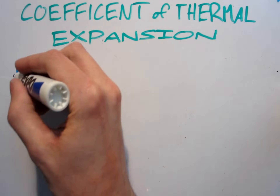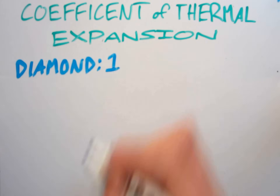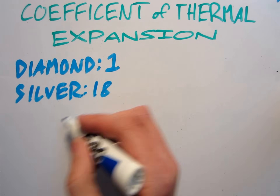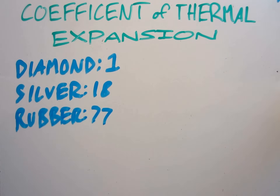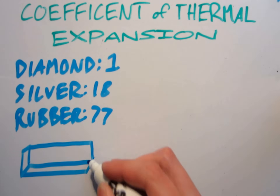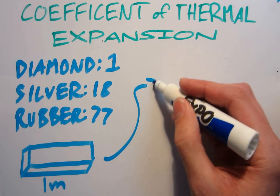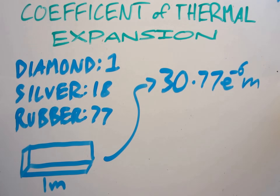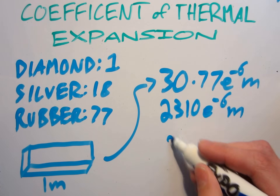Diamond, which is obviously a very hard material, has a coefficient of 1. Silver has 18, and rubber comes in at 77. To give you an idea of what these numbers mean, if you had a meter-long rubber eraser in your freezer and you moved it outside on a hot day — say going from 0 to 30 degrees Celsius — it would get about 2 millimeters longer.